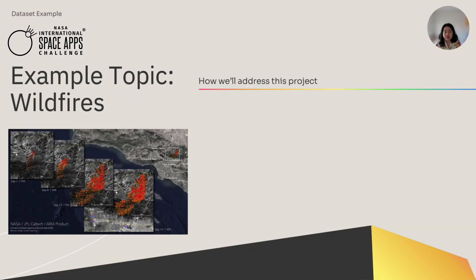Now let's look at an example application of wildfires and outline the steps we would take for this project. Here we show an OPERA ARIA product using Sentinel-1 SAR imagery over a wildfire in Southern California. With multiple data takes, we're able to track the burn progression of this fire.